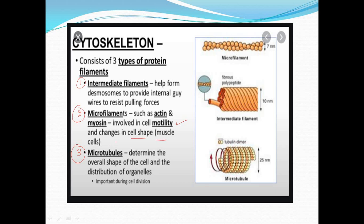That is muscle contraction — the extension and contraction of muscle. Intermediate filament helps in forming the desmosomes, which is a junction, and provides internal support to resist pulling forces. Microtubules determine the overall shape of the cell and the distribution of organelles. Here, this is the microfilament, these are the intermediate filaments, and tubulin is the protein of microtubules.